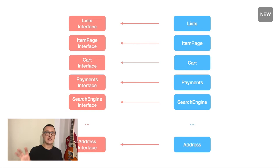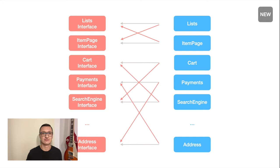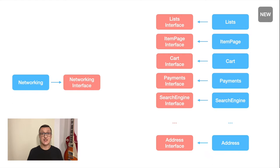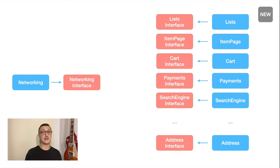So every private module with implementation has a corresponding public module with interface. There is this rule of thumb: private modules can import only public modules. And in this new approach, implementations for the types available on the public interface get magically injected with our dependency injection mechanism. Before I explain what the dependency injection mechanism in the Allegro application looks like, let's focus on dependency injection itself for a moment.